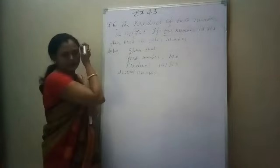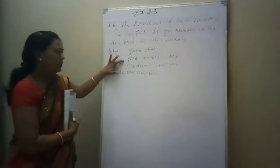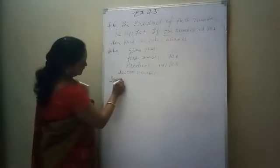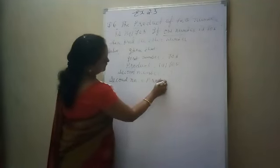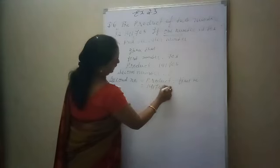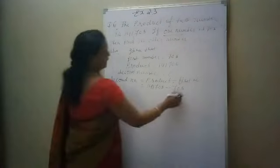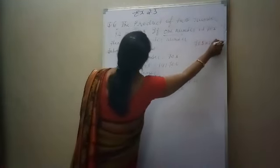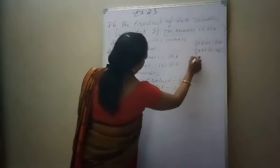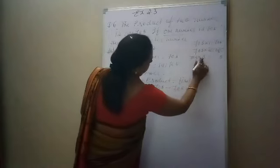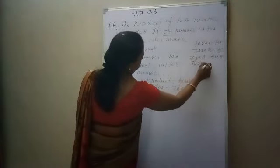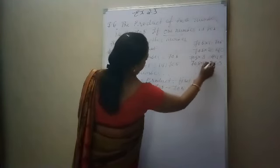When the multiplication of two numbers is given and we know the first number, and we want to find the second one, the second number equals the product divided by the first number. So: 1,41,705 divided by 705. We will make the table of 705: 705 multiplied by 2 — 5 into 2 is 10, carry 1, 0 into 2 is 0, 7 into 2 is 14 — gives 1410. 705 multiplied by 3: 3 fives are 15, carry 1 — gives 2115. 705 multiplied by 4: 4 fives are 20 — gives 2820.